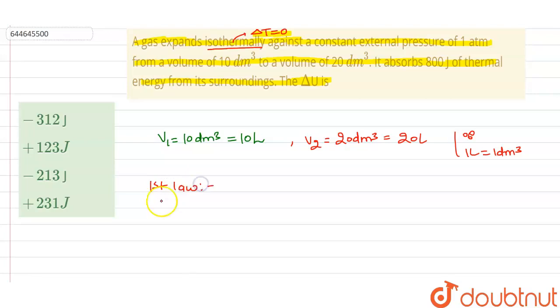Now here we use the first law of thermodynamics which tells about the law of conservation of energy. It states that the energy can neither be created nor be destroyed, it can be transformed from one form to another, which is indicated by the formula that delta U is equal to q plus w, where q is the heat exchange between system and surrounding and w is the work done.